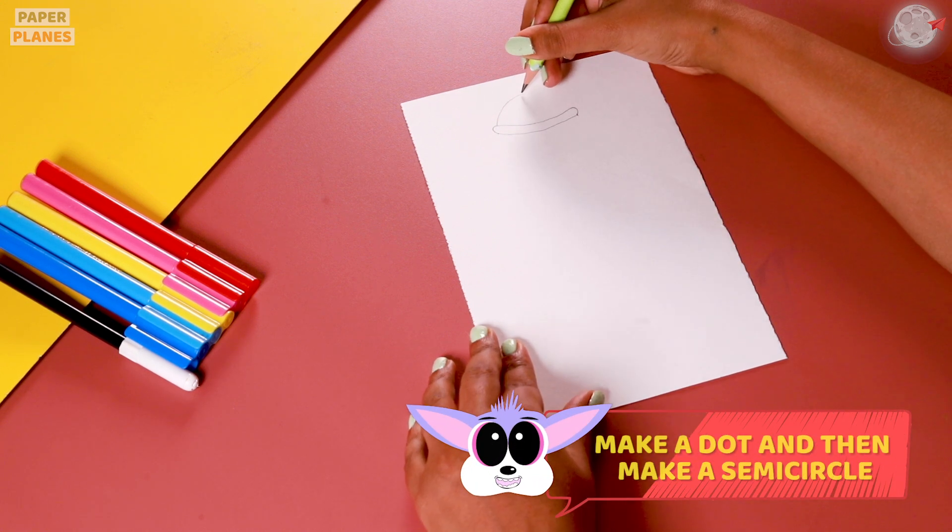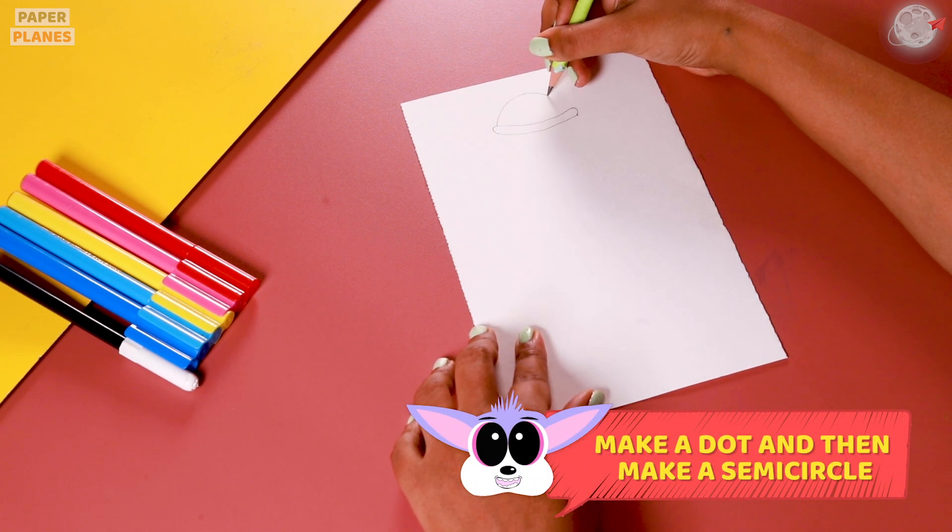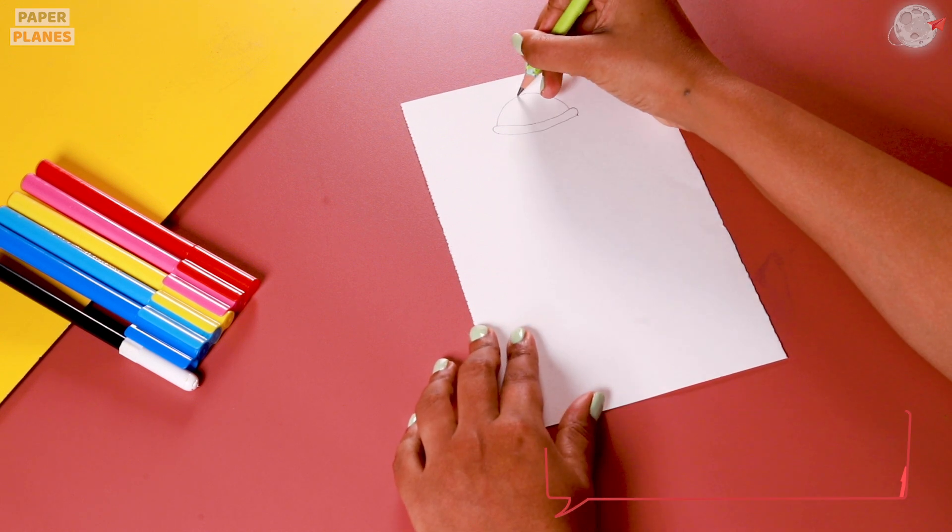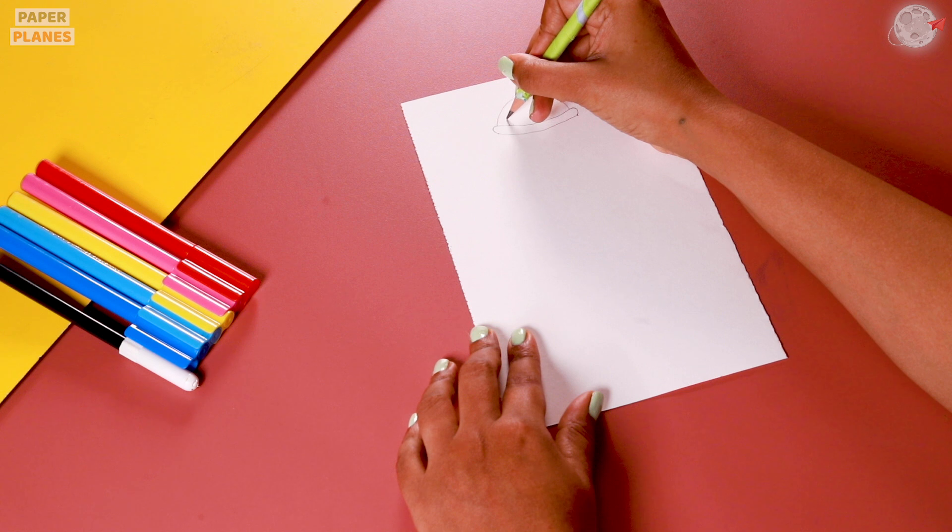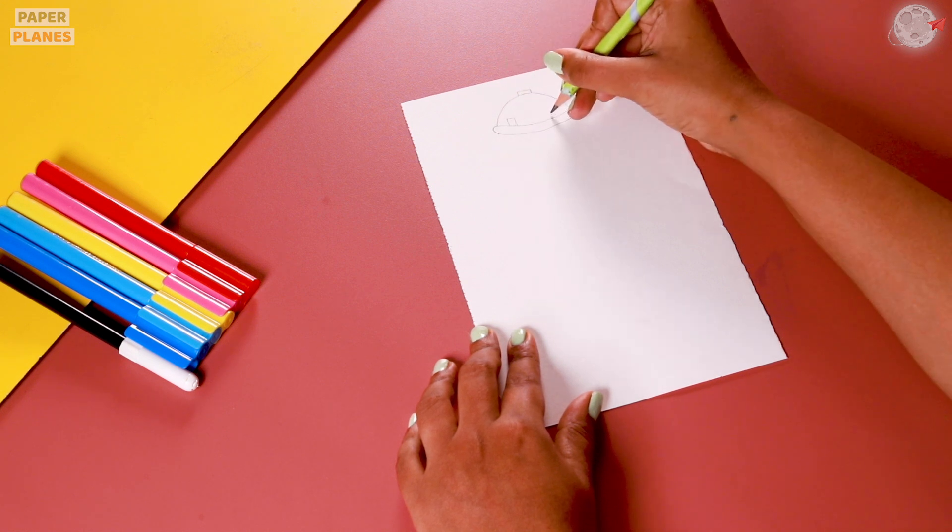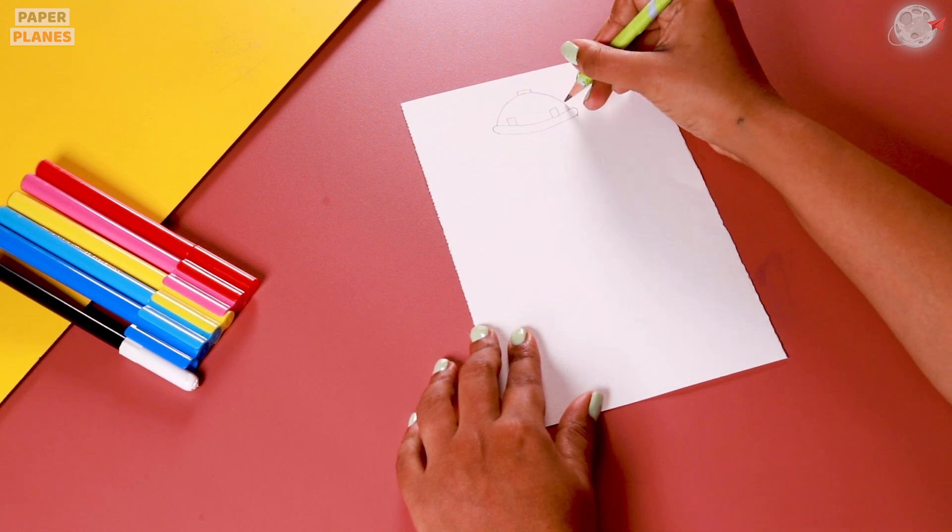Yes! For making a semi-circle, we will make a dot in the center and then complete the circle. After that, why don't we make such boxes? Great! This is the helmet and it looks perfect.